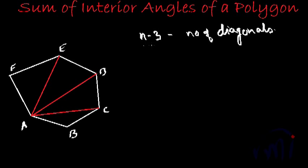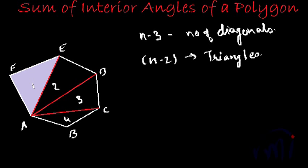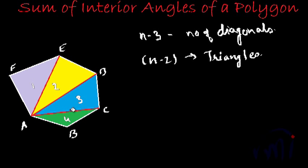By drawing these diagonals, I am actually able to divide this polygon into 1, 2, 3, 4 — that is n minus 2 triangles. And now let's color all these triangles in different colors: let this be the first triangle, let this be the second triangle, let this be the third triangle, and let this be the fourth triangle.